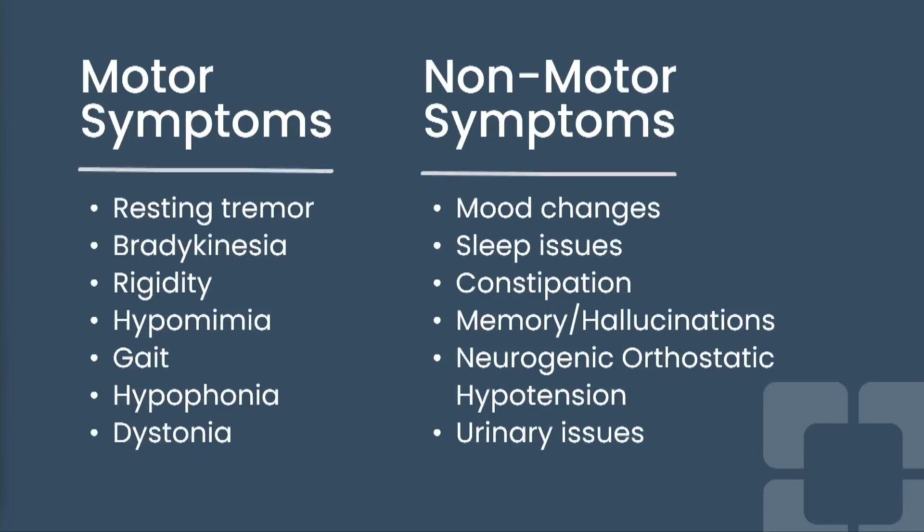When we talk about the symptoms of Parkinson's, we discuss them in two ways: motor symptoms and non-motor symptoms. Motor symptoms are things we can see or assess — resting tremor, slowness, smallness of movement, rigidity. Hypomimia is a medical term for decreased facial expression, such as decreased blinking or not smiling as much. Gait changes in Parkinson's typically include reduced arm swing, more stooped posture, and shorter, shuffly steps.